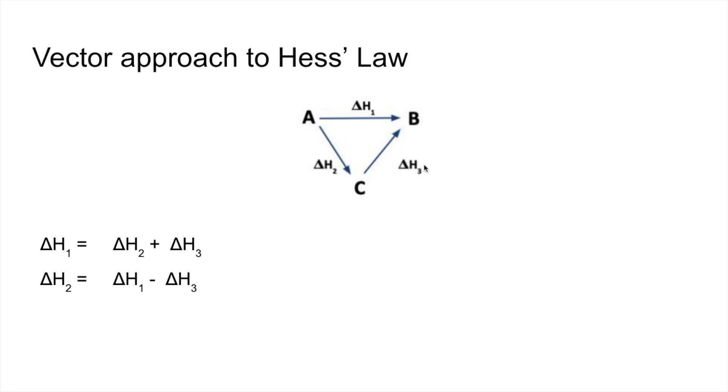The final one is ΔH₃. We want to go C to B. Now we need to go from C to A then A to B, so the route's that way. You can see this arrow is okay, it's going in the correct direction of the route, but this one's going in the wrong direction.